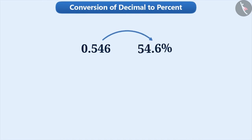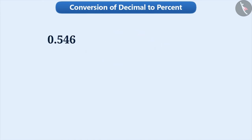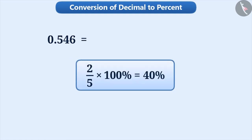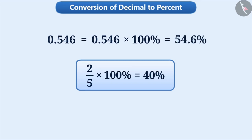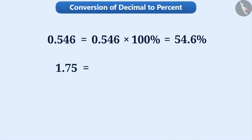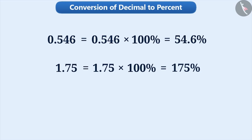Now let's learn the conversion of decimal to percent and vice versa. Suppose we have to express 0.546 in percentage. Just as we multiplied by 100% to convert a fraction into percentage, we also multiply decimal numbers by 100% to convert into percentage. So 0.546 into 100% equals 54.6%. Similarly, 1.75 into 100% equals 175%. In both situations, the percent has the same digits as the decimal number — only the decimal point is moved to the right.